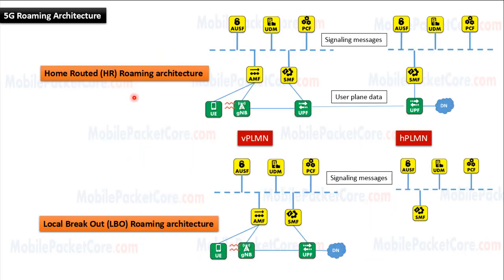There are two types of roaming architecture: Home Routed (HR) roaming architecture, and Local Breakout (LBO) roaming architecture.